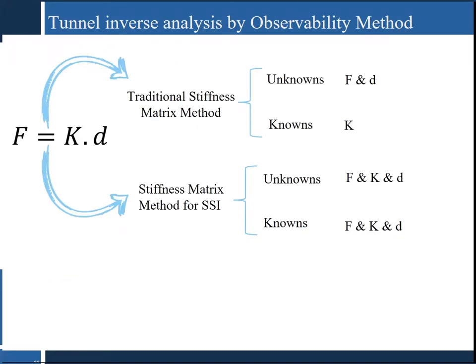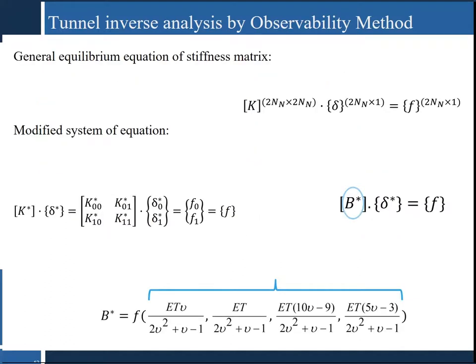The traditional application of the stiffness method assumes that all characteristics of the beams are known, and therefore unknown parameters are only found in vector delta and vector F. However, in the new stiffness matrix method for SSI, the unknowns and non-variables could be found in all three matrices: F, K, and D. With the purpose of determining the unknown parameters, a modified system of equations can be written in which products of unknowns are transferred into vector delta-star and the K matrix becomes a matrix of known coefficients.